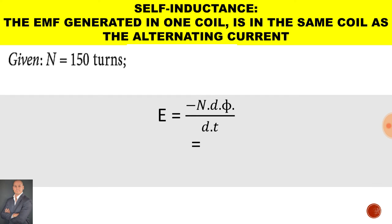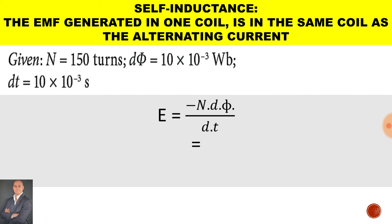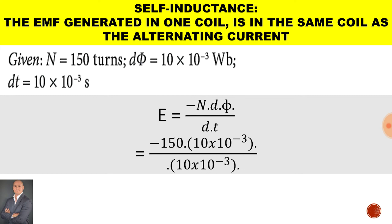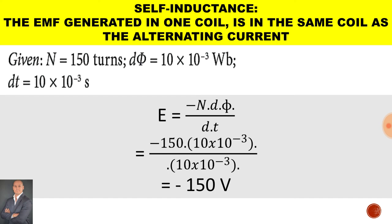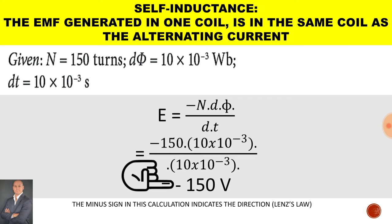If we are given 150 turns, a change in flux of 10×10⁻³ Weber, and the time that the flux changes is 10×10⁻³ seconds, substituting all those values in, we can cancel out the two brackets, and the generated EMF is minus 150 volts. The minus sign in this calculation indicates the direction, and that is according to Lenz's law.